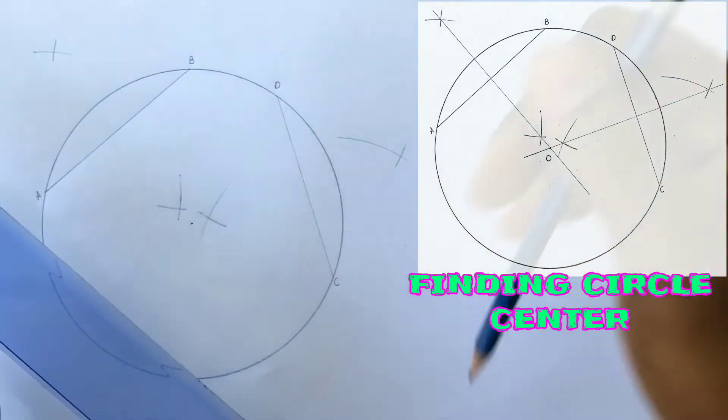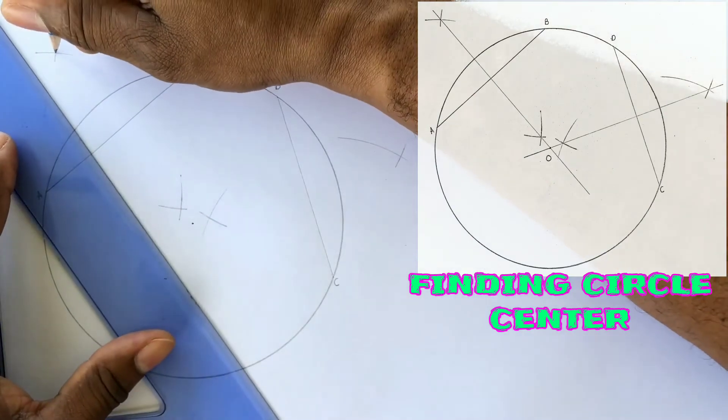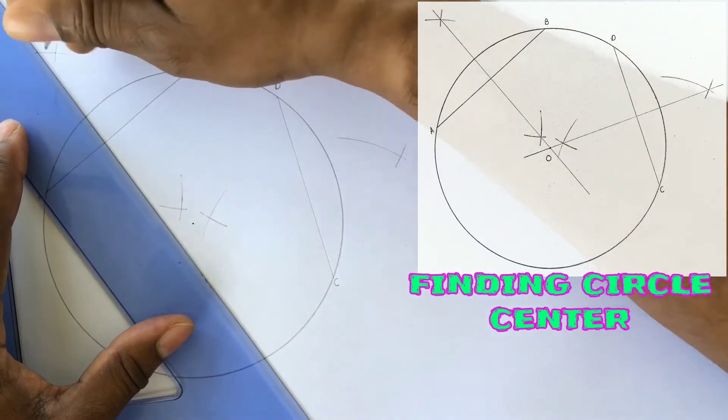Now draw lines to pass through the center of each intersecting set of arcs you drew.